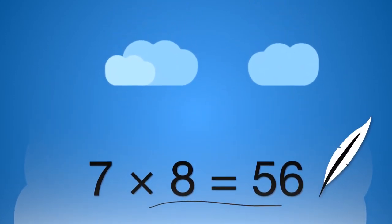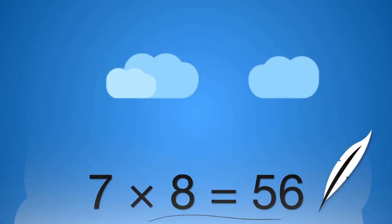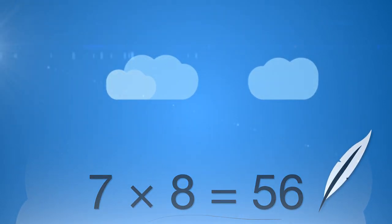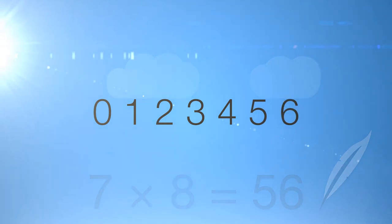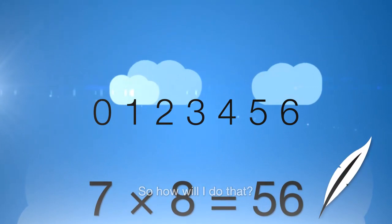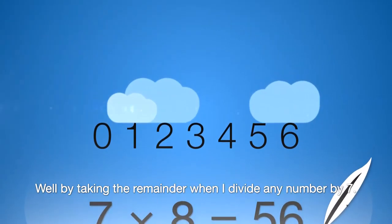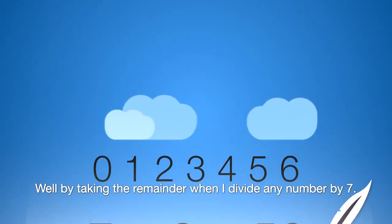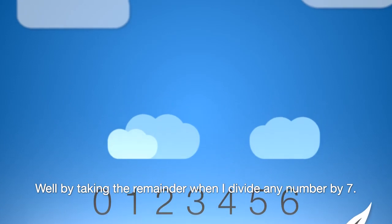So what I'm going to do today is replace every number with one of just seven numbers: 0, 1, 2, 3, 4, 5, and 6. So how will I do that? Well, by taking the remainder when I divide any number by 7.